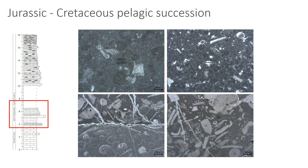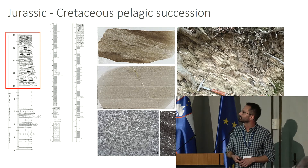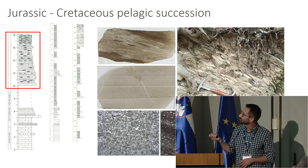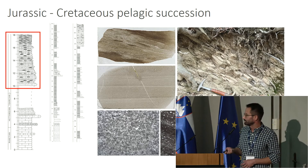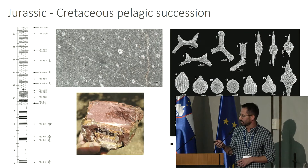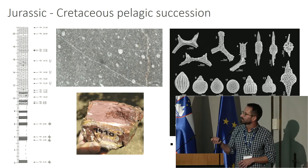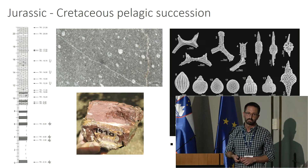Here you have foraminifera — Involutina liassica and also Videlina martana — which indicate a lower Jurassic age. For most of the lower Jurassic, pelagic carbonates and also marls were deposited; they are full of radiolarians. These pelagic limestones are all calcitized and I wasn't able yet to extract anything from them. From the Middle Jurassic onwards, again with some help of regional correlation, you have deposition of radiolarites. I was able to extract radiolarians from only four samples at one locality, and they indicate a Callovian to early Tithonian age.